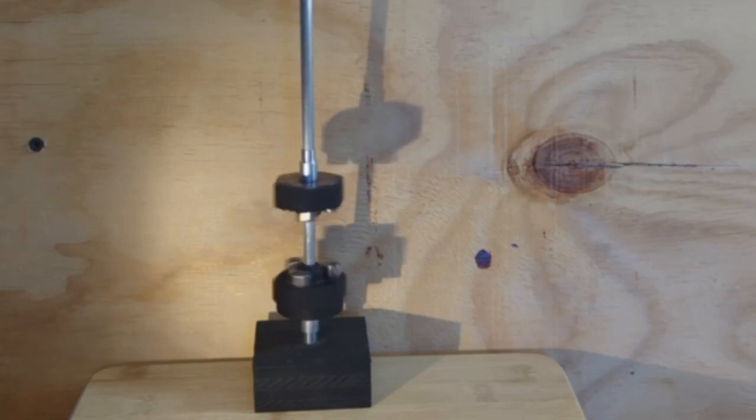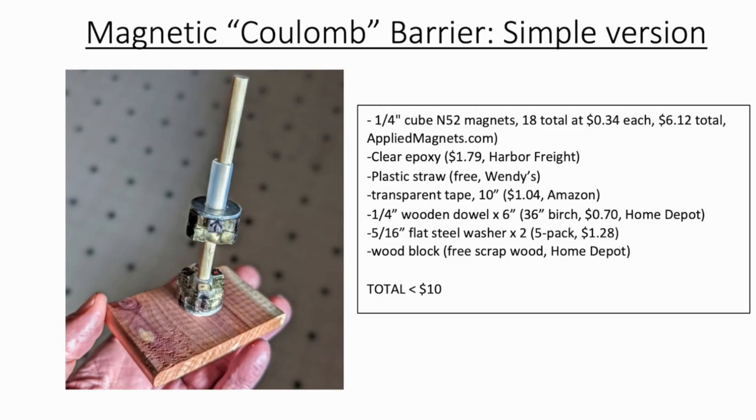An inexpensive version of the magnetic Coulomb barrier can be made with transparent tape wrapped around magnets stuck to a steel washer and filled with clear epoxy, centered around a plastic straw.